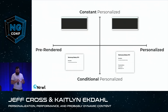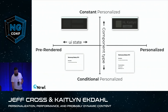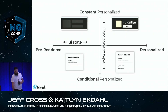You can plot it on an axis: on one side our UI state — either pre-rendered or personalized — and then our component type. We see the strategies we use: the ghost element for the constant component, the smooth transition for the conditional component, and everyone is happy.